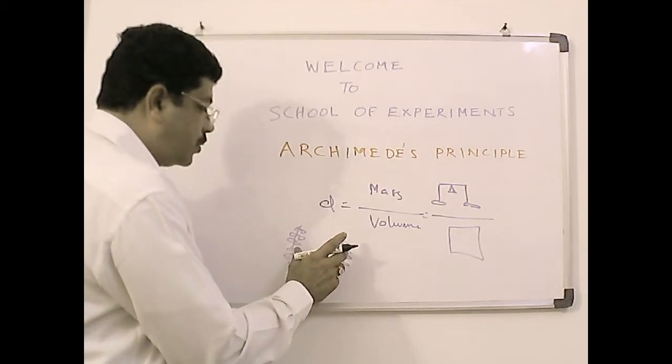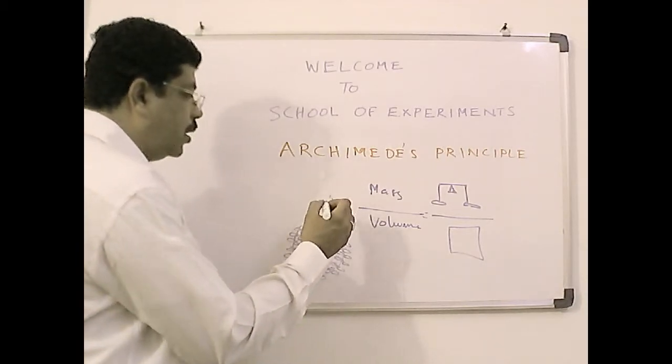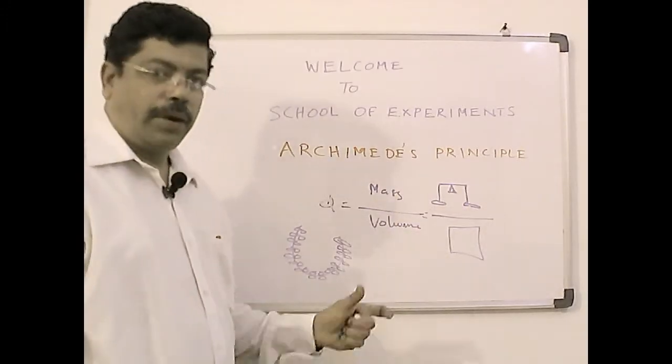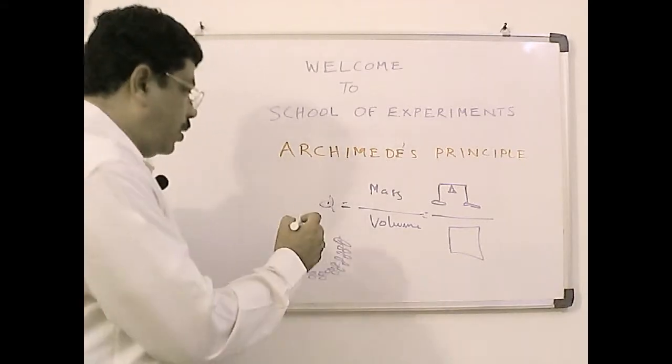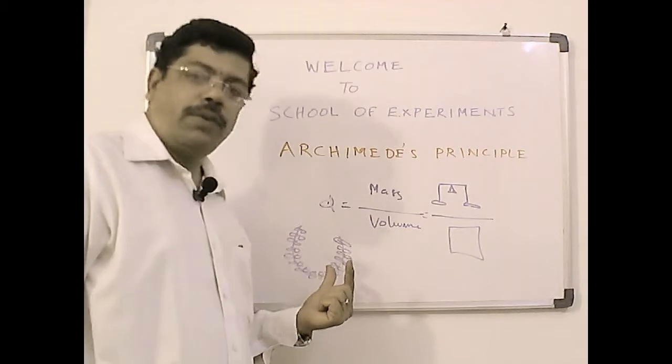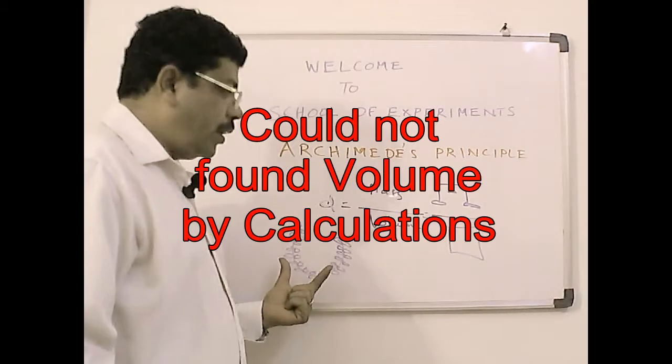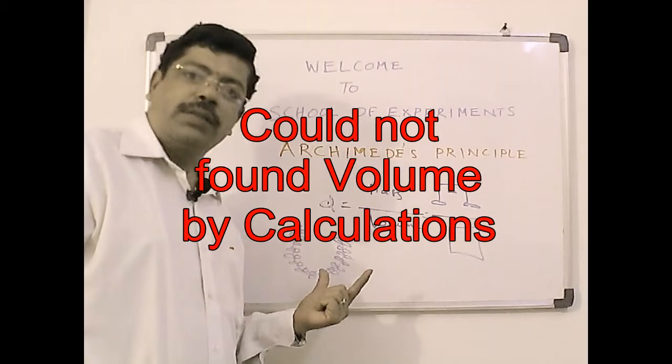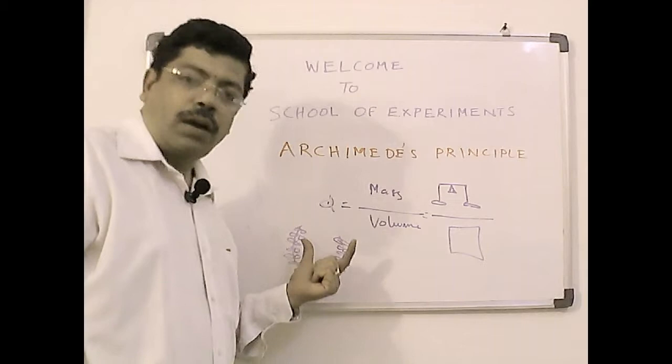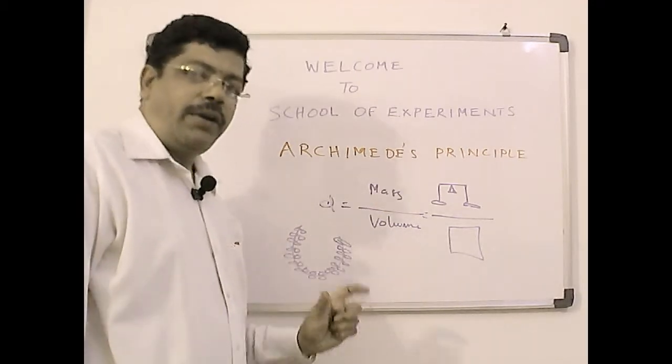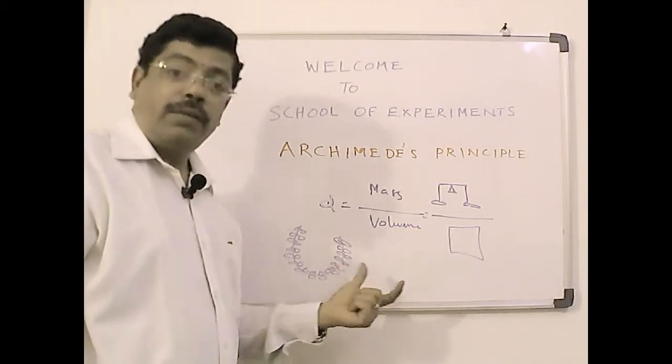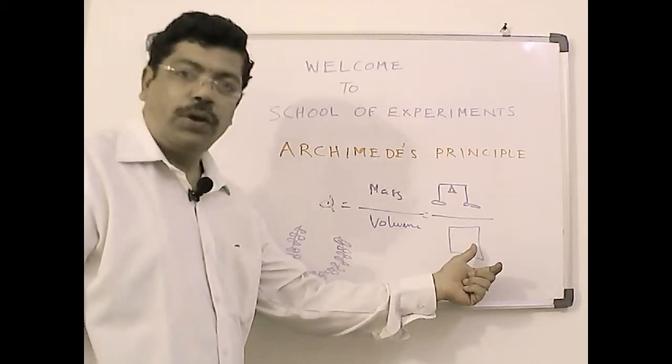What Archimedes did is he knows the density of pure gold because he knows the shape of the pure gold and he could measure it, but when the crown was of very peculiar shape, finding out its volume was difficult for him. So what he did is he just immersed this crown into water and found out how much water was displaced by this crown and then he found out the volume basically.